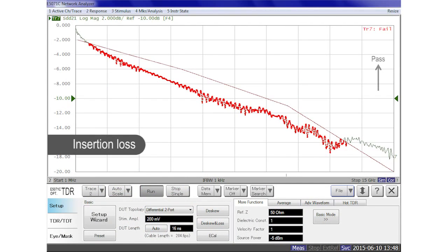What I have shown here is the insertion loss measurement of the prototype type C cable. This measurement is done without any correction and this red line is the test limit for USB type C and this cable is failing.